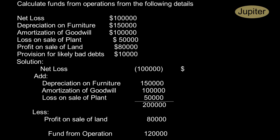Now let us see the problem here. Calculate funds from operations from the following details: Net loss $100,000, Depreciation on furniture $150,000, Amortization of goodwill $100,000, Loss on sale of plant $50,000, Profit on sale of land $80,000, Provision for likely bad debts $10,000.